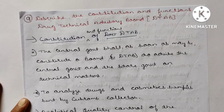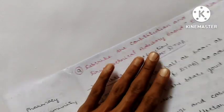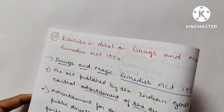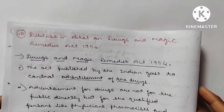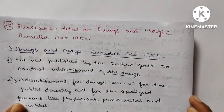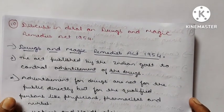The majority of power is given to the Drug Technical Advisory Board. It can sort out disputes related to drugs and cosmetics. All such powers have been given to the DTAB.